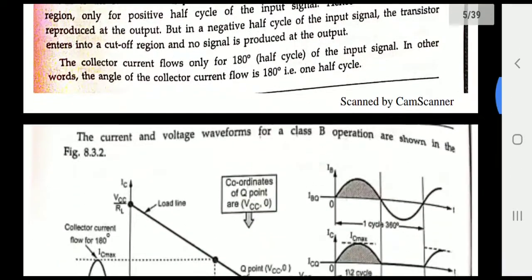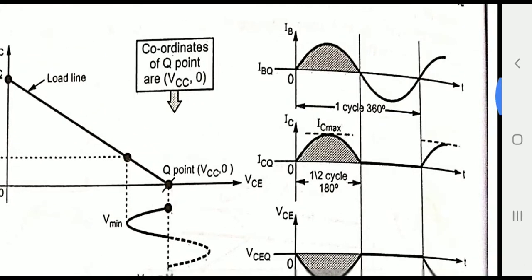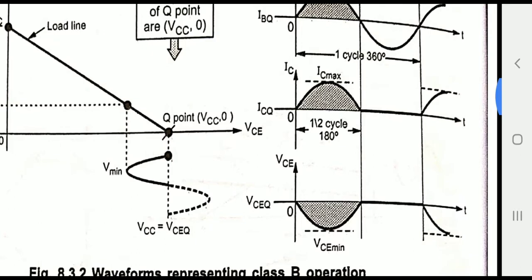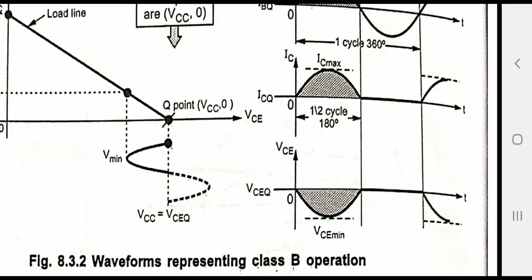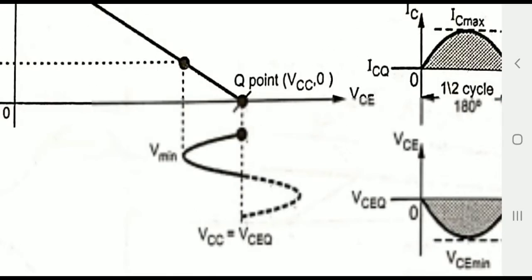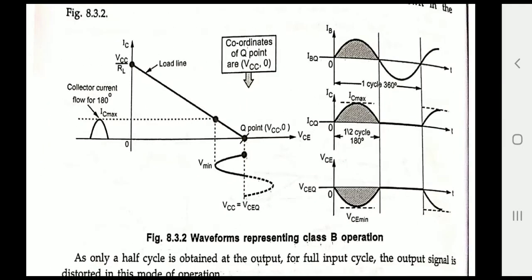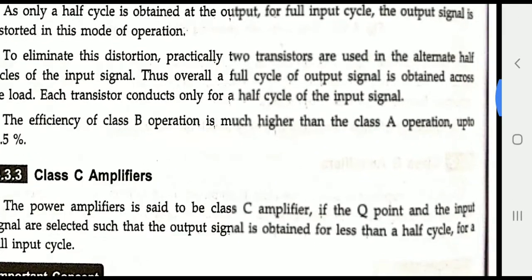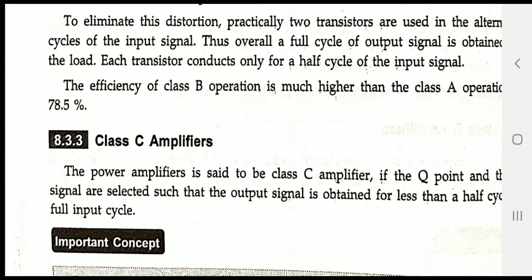In the graphical representation, IB is the input current, IC is the output current, and VC is the output voltage. Only 180-degree output cycles are obtained; the remaining 180 degrees is off because the transistor operates in the cutoff region — the Q point is placed along the X axis (the Vce axis). For only one half cycle the transistor is on; for the remaining half cycle it is off. The advantage is that the efficiency of the Class B amplifier increases up to 78.5%.